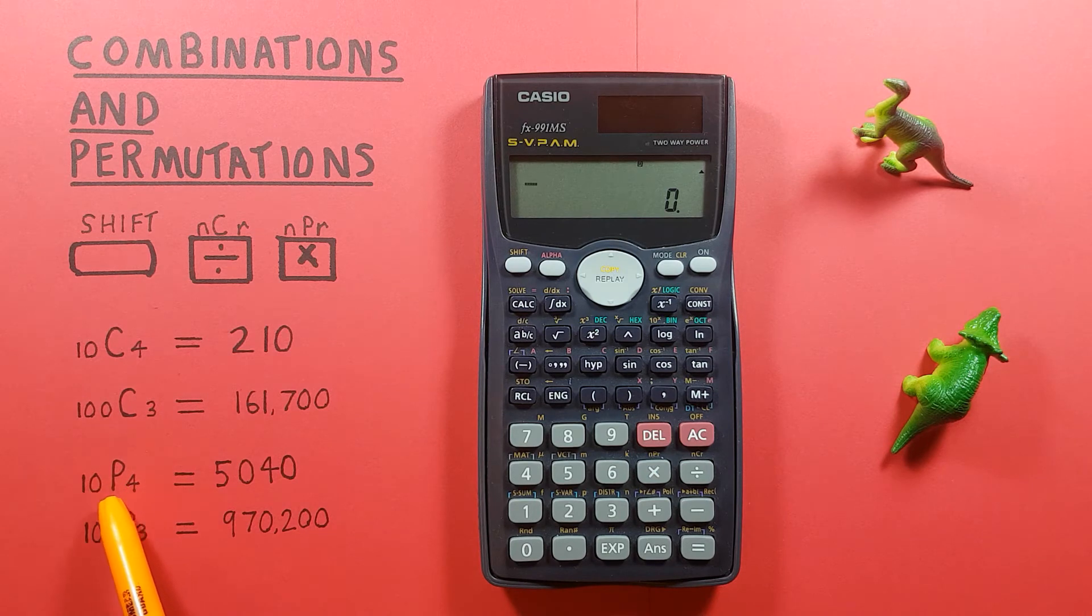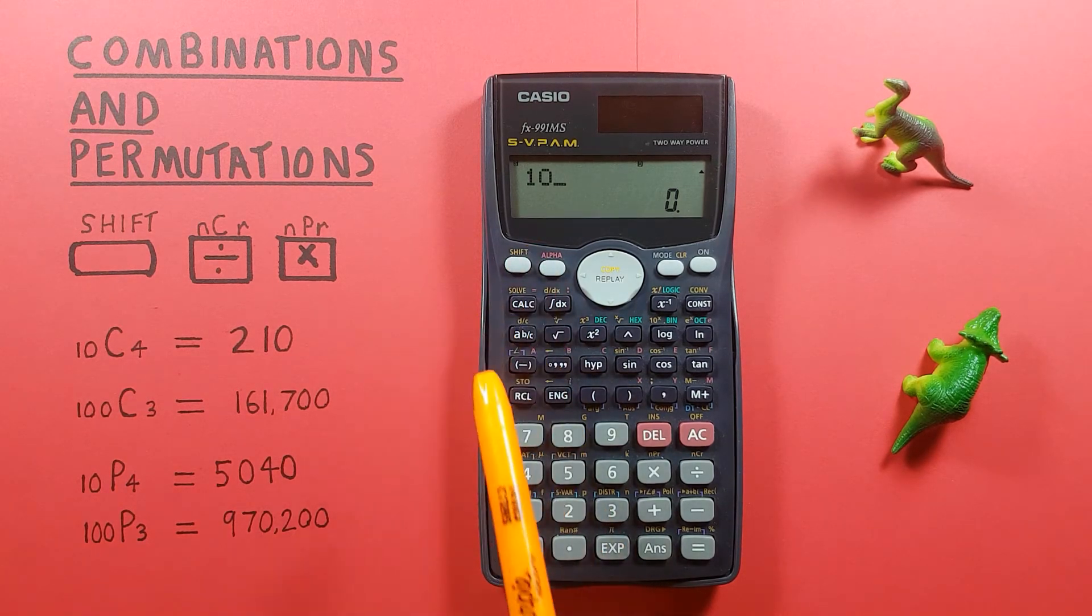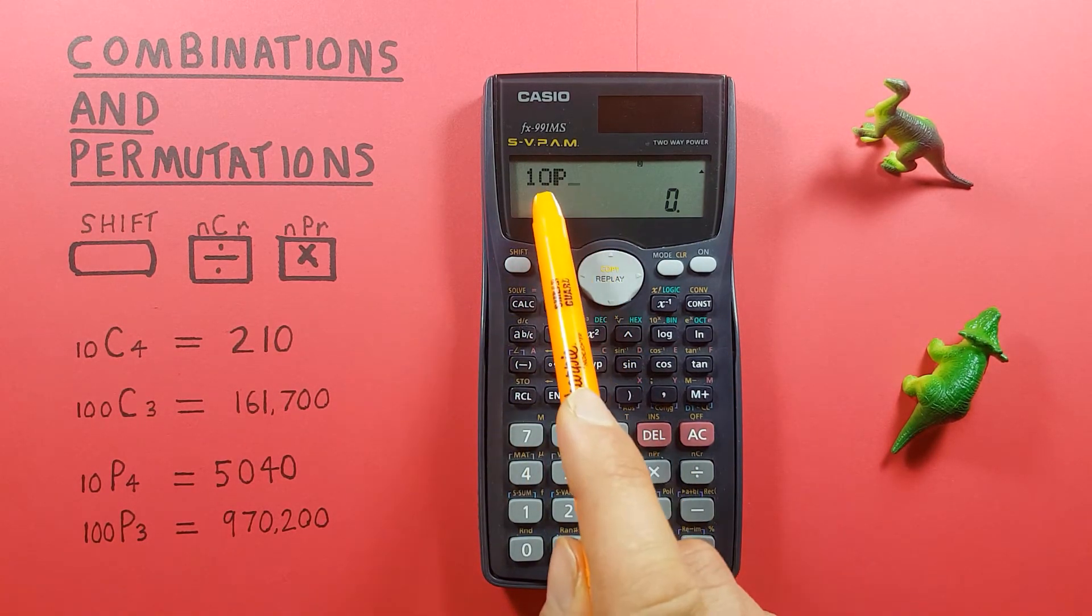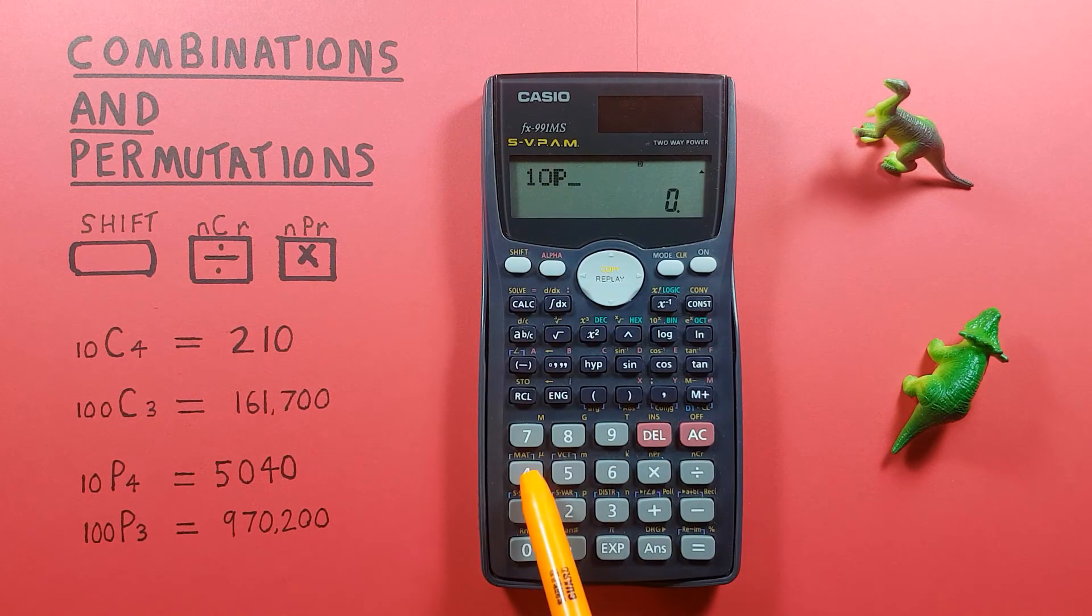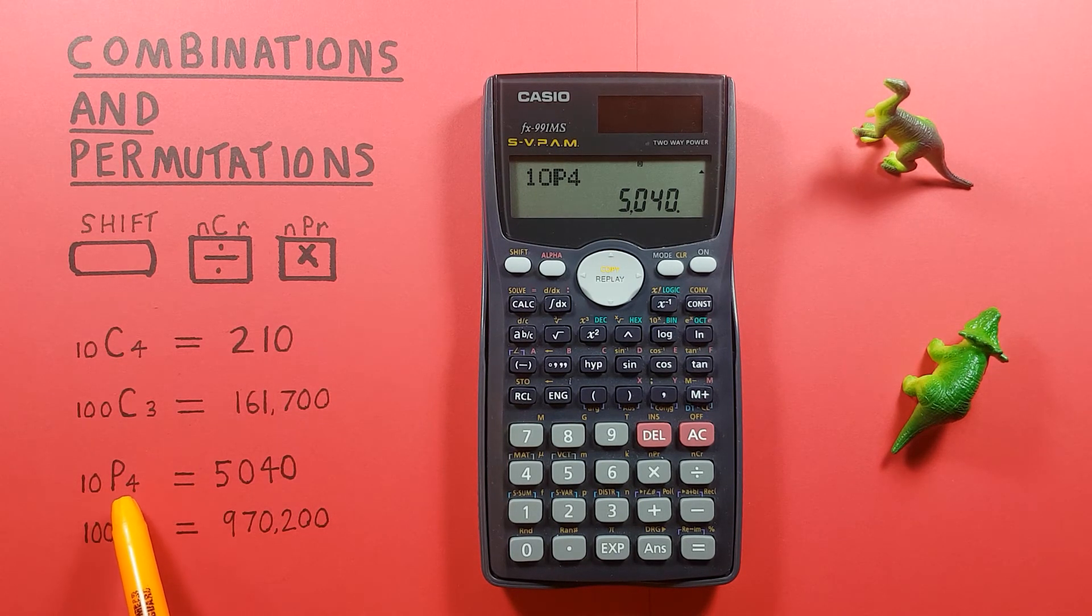So if we want to see how many permutations there are of choosing four objects from a set of ten, we enter the ten and then shift multiply so that we see a P there this time. Enter the four and press equals, and we see there are 5,040 possible permutations choosing four from a set of ten.